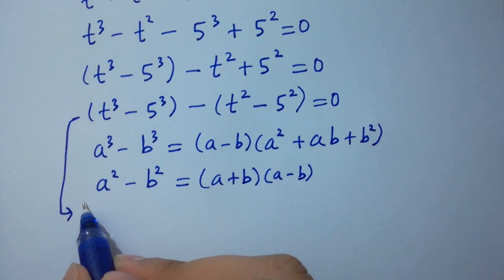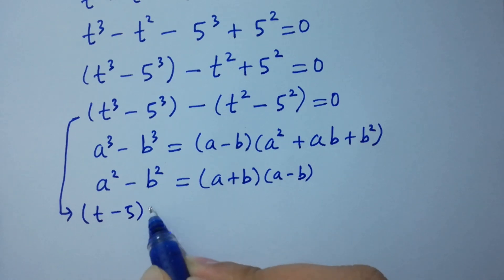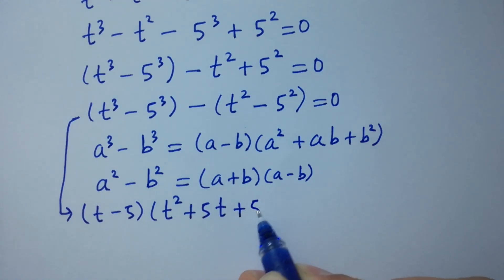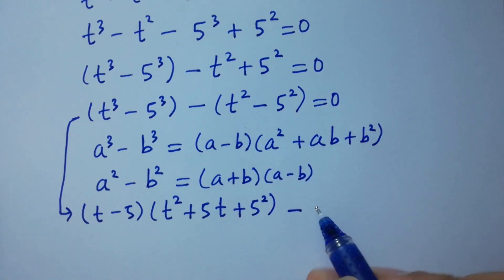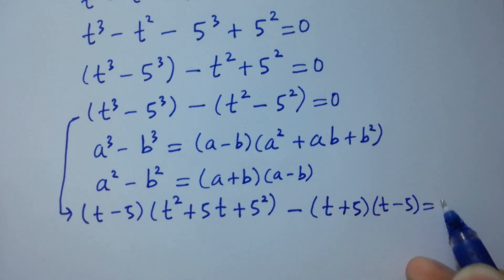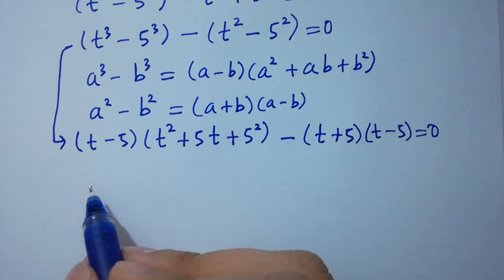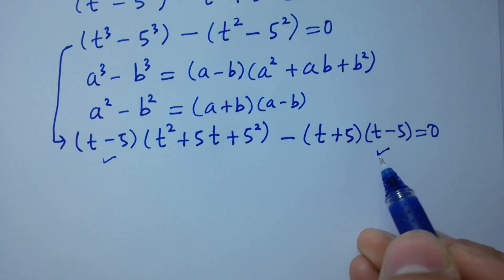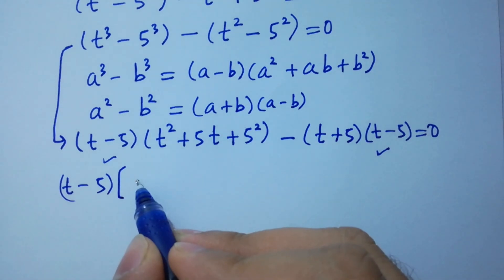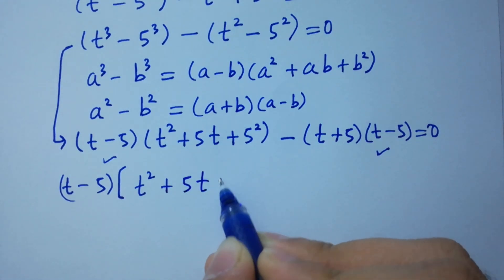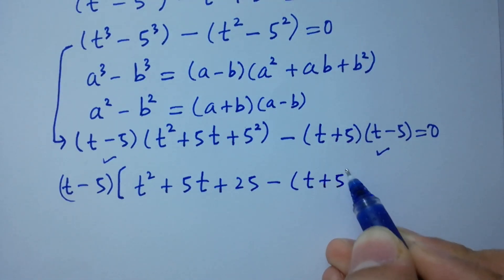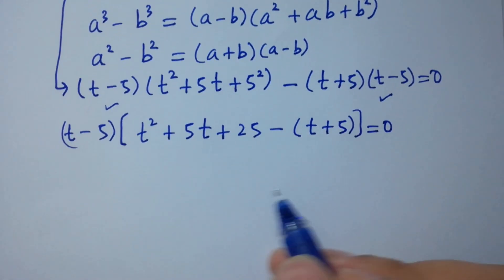Applying these formulas: t cubed minus 5 cubed gives (t minus 5)(t squared plus 5t plus 25), and t squared minus 5 squared gives (t plus 5)(t minus 5). Setting equal to 0 and noting that (t minus 5) is a common factor.